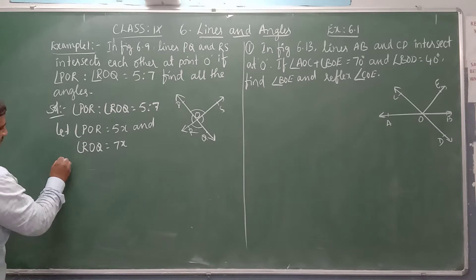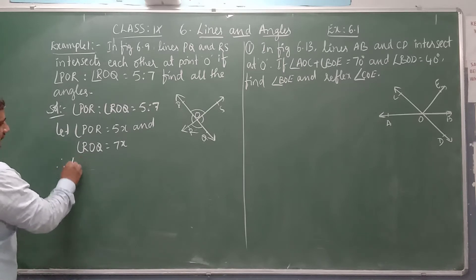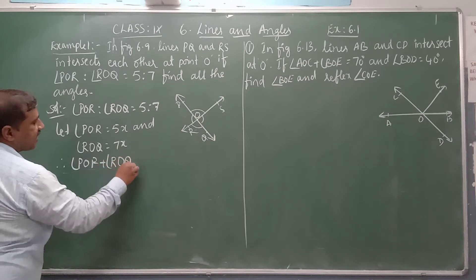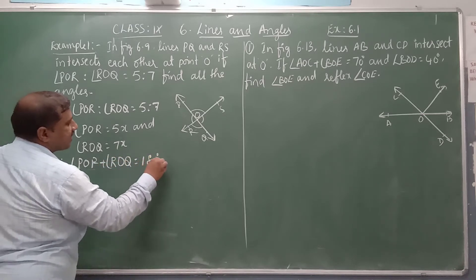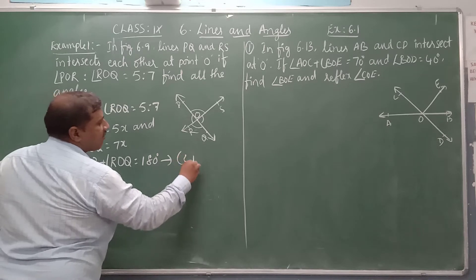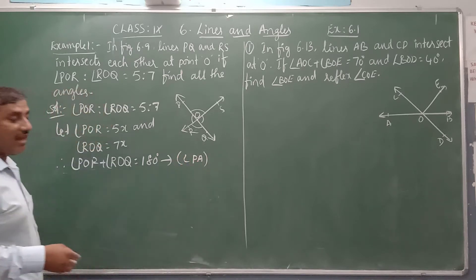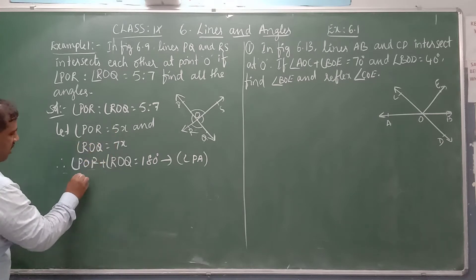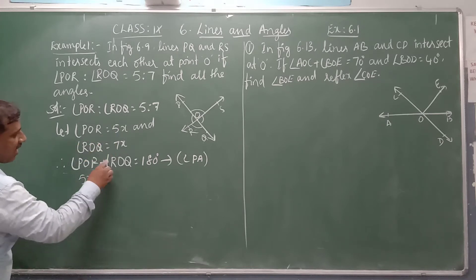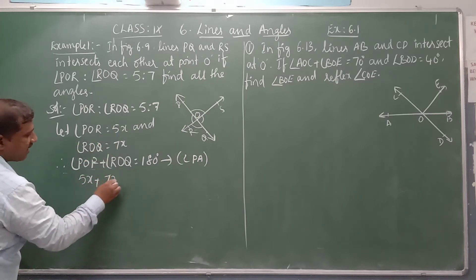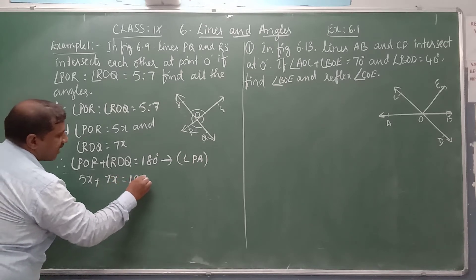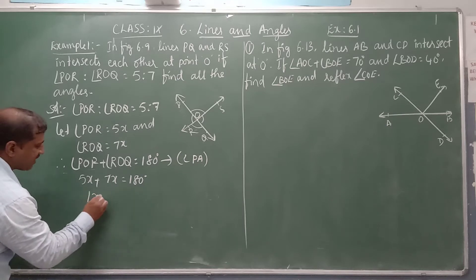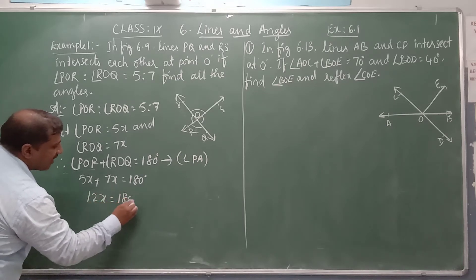The sum of these two angles: angle POR plus angle ROQ is equal to 180 degrees. Why? Linear pair of angles. So 5X plus 7X equals 180 degrees. Simplifying: 12X equals 180 degrees.